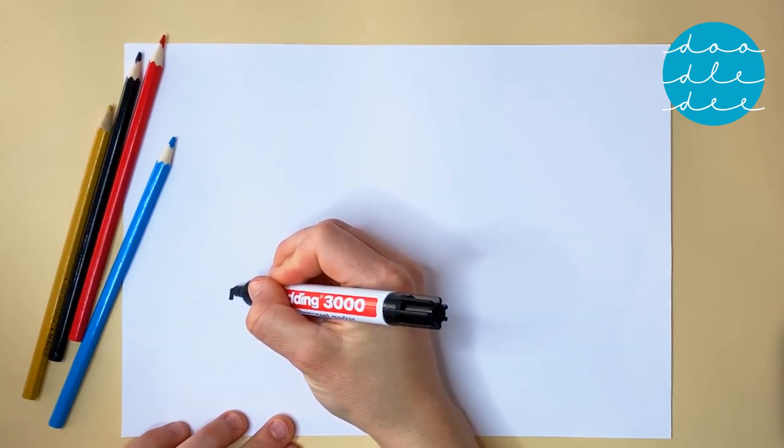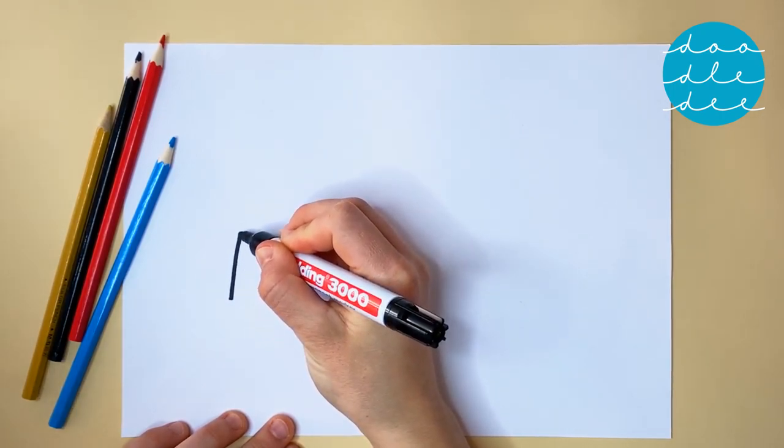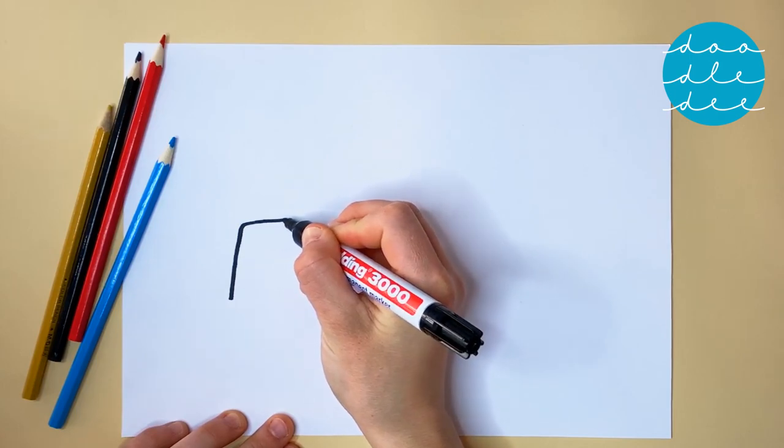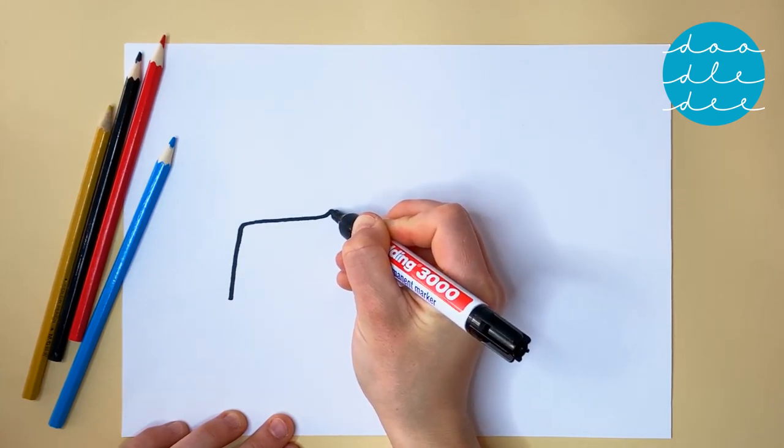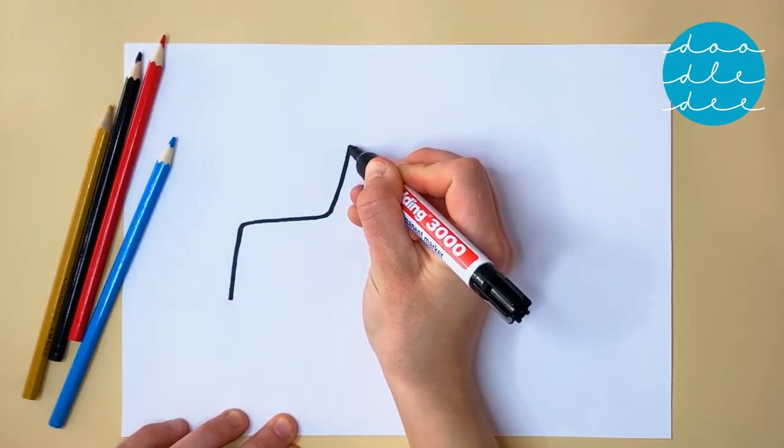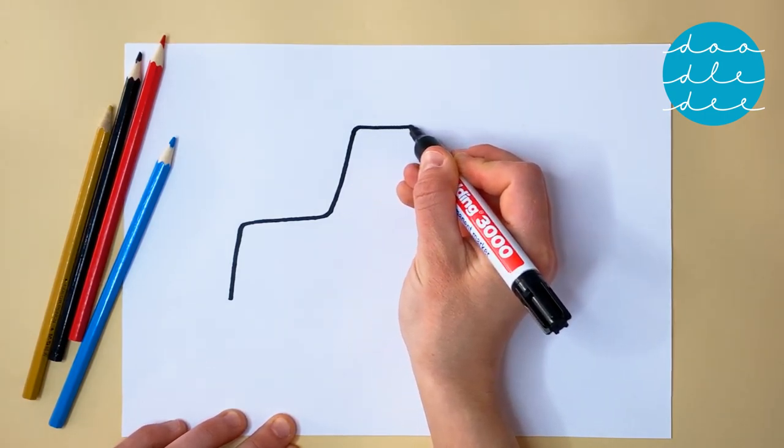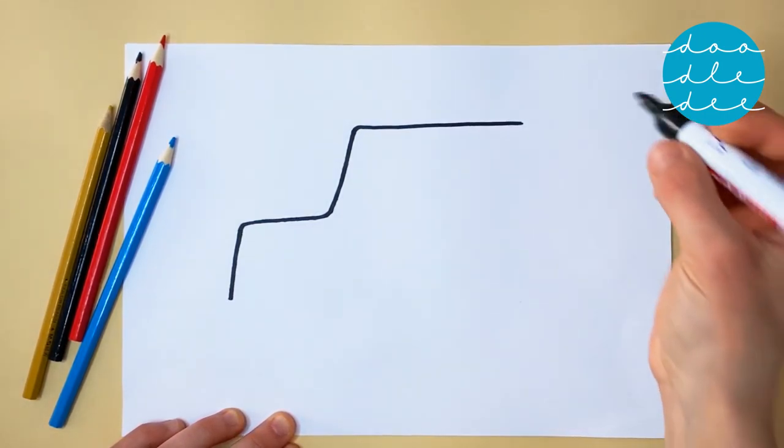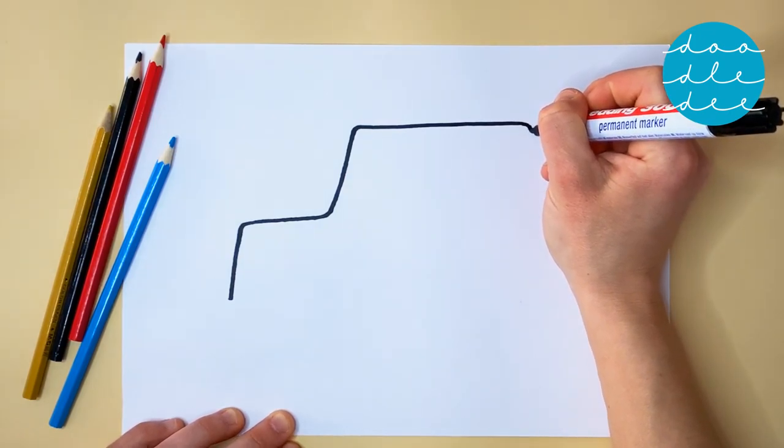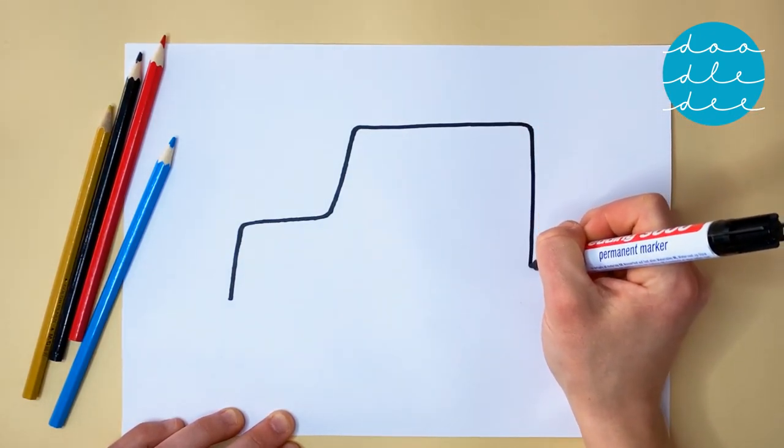Start with a straight line up, and then across, then up again and across again. Now a line all the way down.